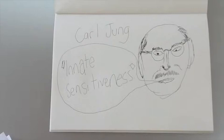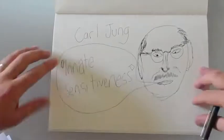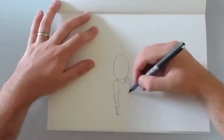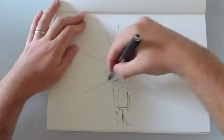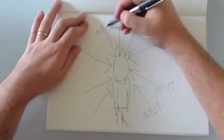Carl Jung called it innate sensitiveness, referring to people who may process sensory data much more deeply and thoroughly due to a biological difference in their nervous systems. This sensitivity boils down to the way that we process the sensory input from the world.